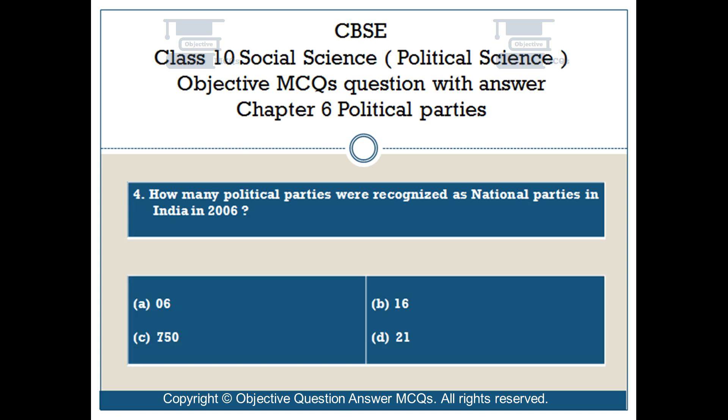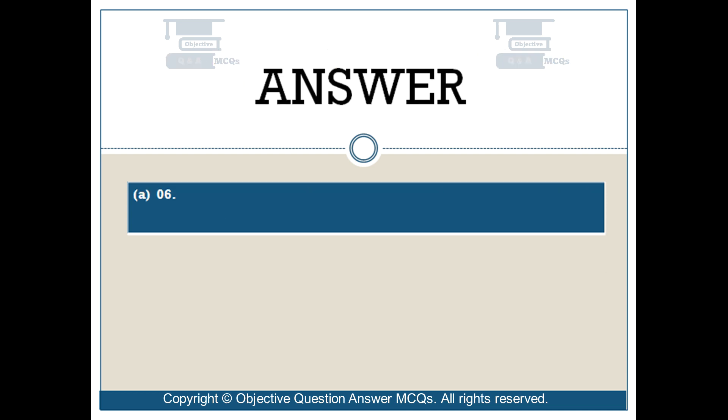Question number 4. How many political parties were recognized as national parties in India in 2006? Option A: 6. Option B: 16. Option C: 750. Option D: 21. The right answer is Option A: 6.